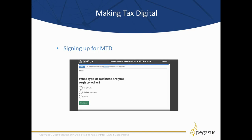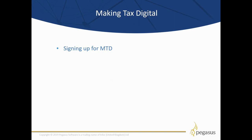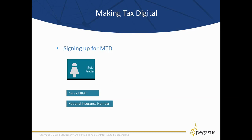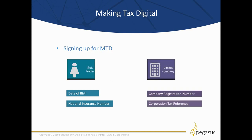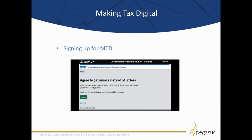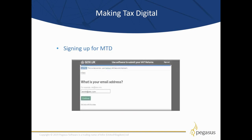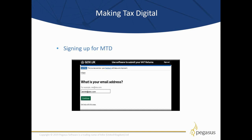Depending on which option you selected, the next question will vary. For a sole trader you'll be asked for date of birth and your National Insurance number. In my example we will sign up as a limited company, in which case you'll be asked for your company registration number and your corporation tax unique taxpayer reference number. Next, you will need to agree to get emails instead of letters — you have to agree to go paperless and receive emails about your VAT account to complete the signup process.